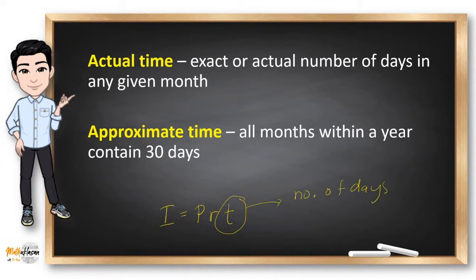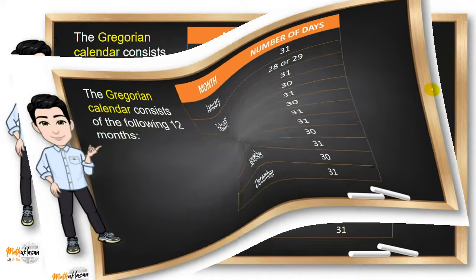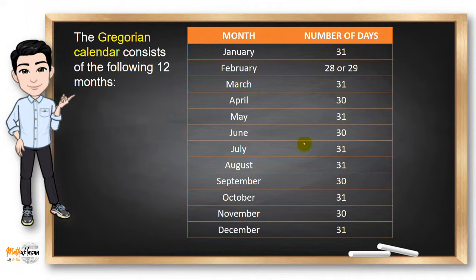The actual time is the exact or actual number of days in any given month. While in the approximate time, we consider all the months within a year contain 30 days. For the actual time, we use the Gregorian calendar that consists of 12 months and contains a specific number of days for each month. Some months contain 31 and others contain 30 days. The only thing we need to be careful about is February because it can be 28 or 29 depending on the leap year.